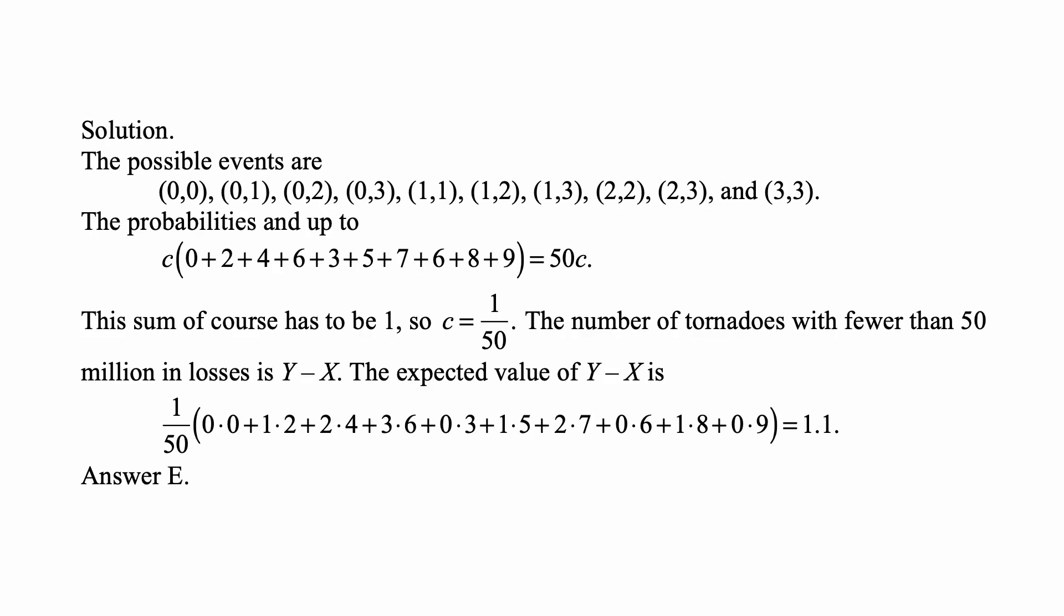Given what these random variables X and Y are, the possible events are (0,0), (0,1), (0,2), (0,3), (1,1), (1,2), (1,3), (2,2), (2,3), and (3,3), because X is less than or equal to Y.